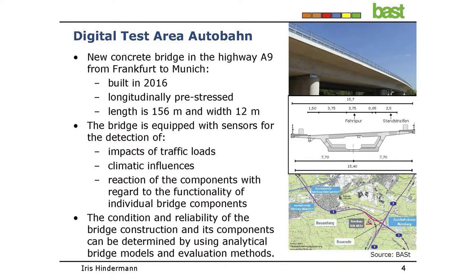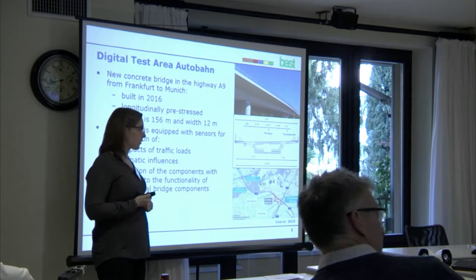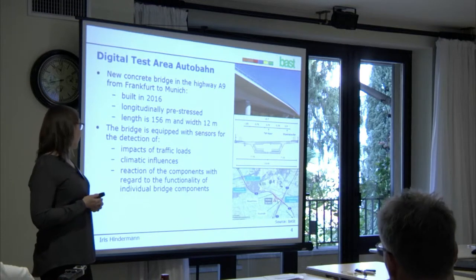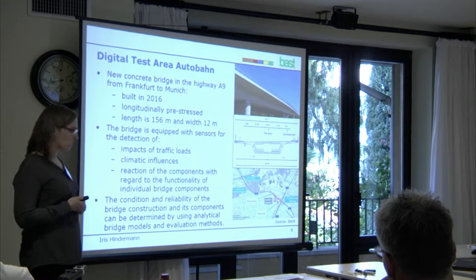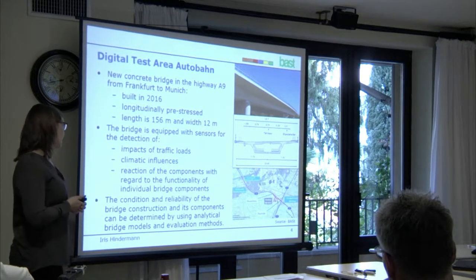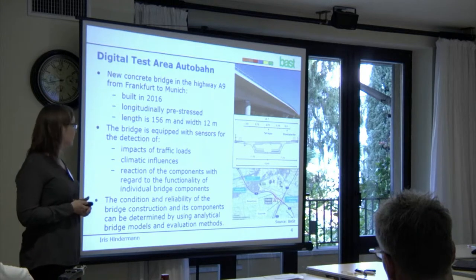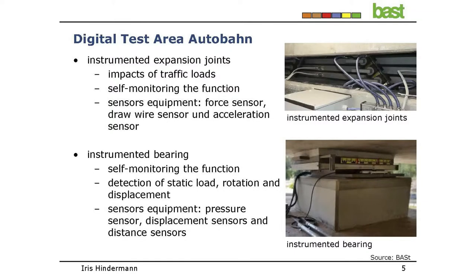The Digital Test Area Autobahn is a new-built concrete bridge on Highway A9 from Frankfurt to Munich. It was built in 2016 and is pre-stressed. The bridge is equipped with different sensors for detection of traffic load, climatic influence, and the reaction of components with regard to the functionality of individual bridge components. The conditions and reliability of the bridge construction can be determined using analytical bridge models and elevation methods.